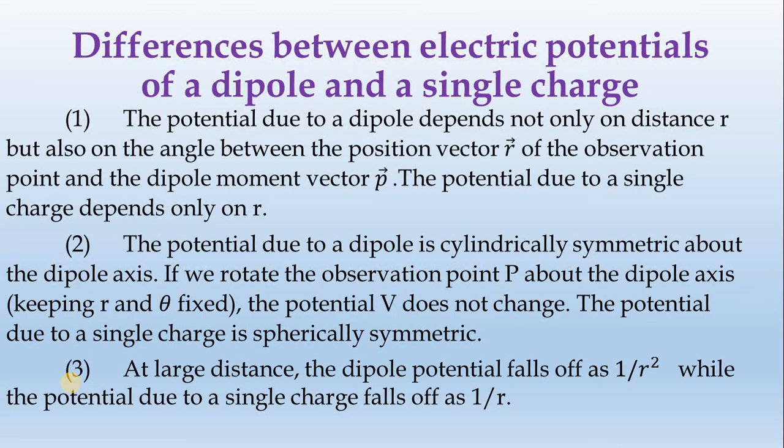The potential due to the dipole depends not only on R but also on the angle between the position vector of the observation point and the dipole moment vector P. The potential due to a single charge depends only on R.